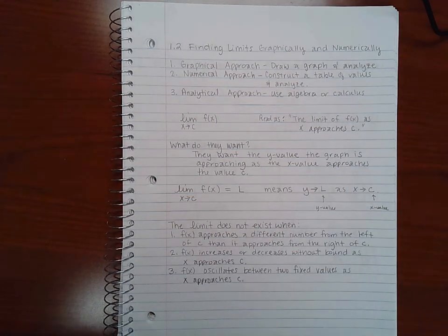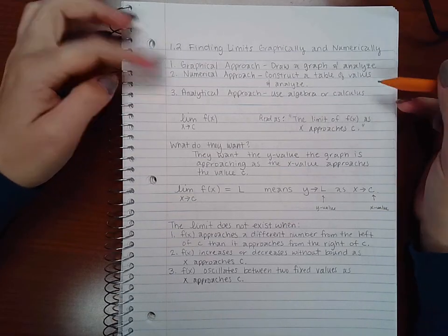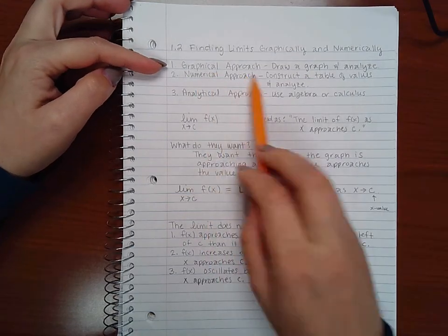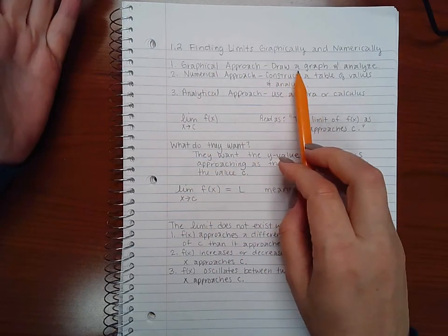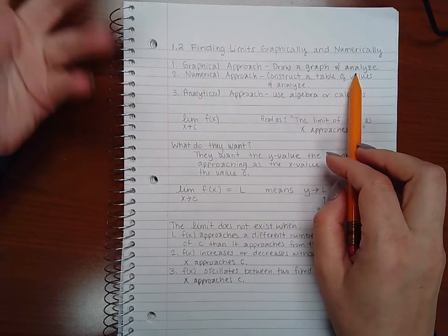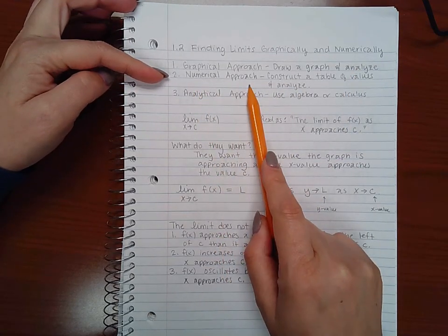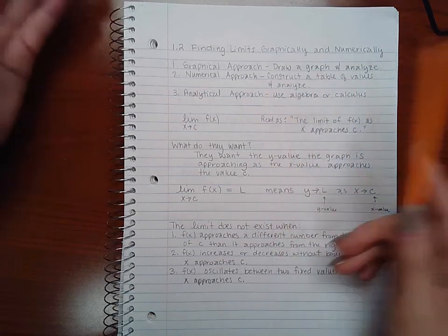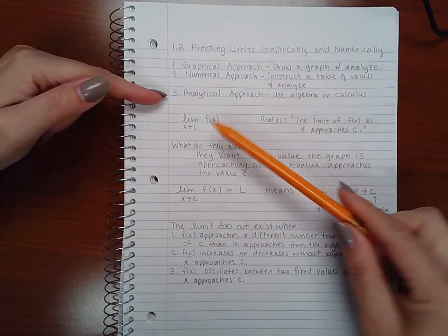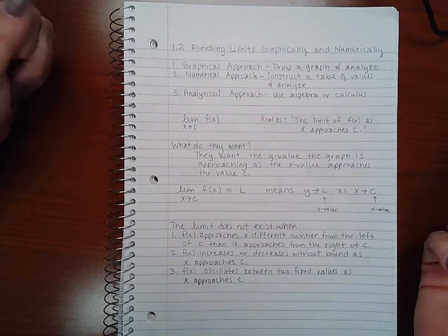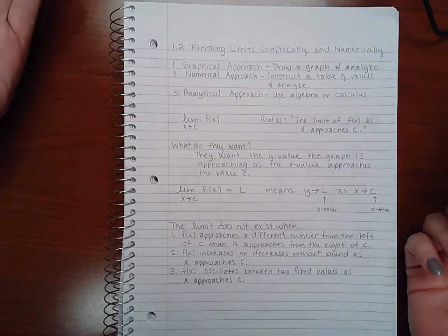In this video we will cover 1.2 finding limits graphically and numerically. There are three ways to find the limit. The graphical approach is to draw a graph or if you're given a graph, analyze what's in the image. The second way is the numerical approach where you construct a table of values and analyze where the values are going. The third approach is the analytical approach where you use algebra or calculus to determine the limit.